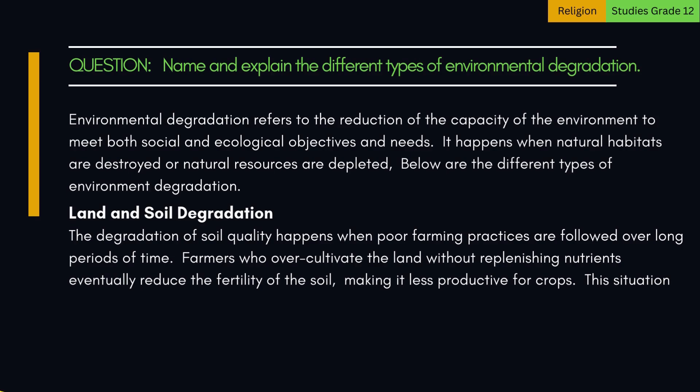1. Land and Soil Degradation. The degradation of soil quality happens when poor farming practices are followed over long periods of time. Farmers who over-cultivate the land without replenishing nutrients eventually reduce the fertility of the soil, making it less productive for crops.